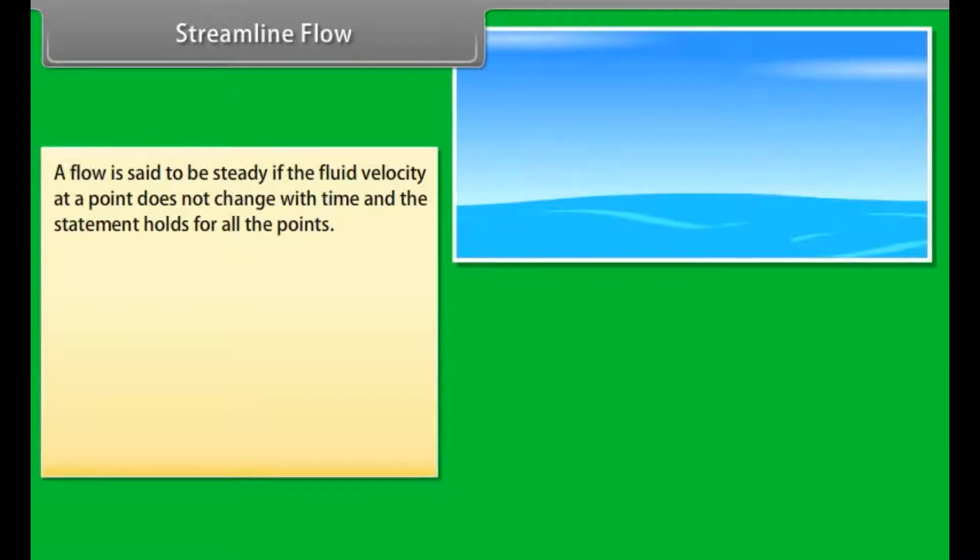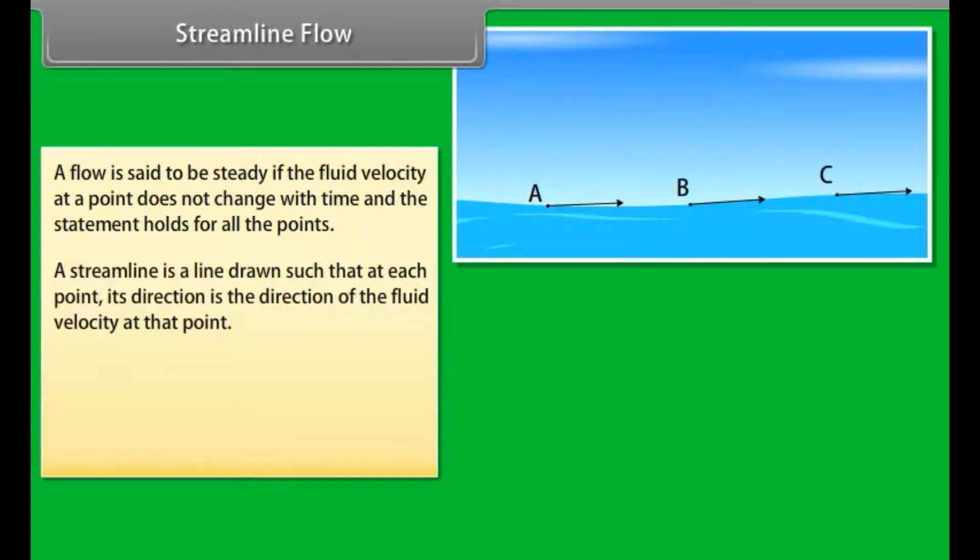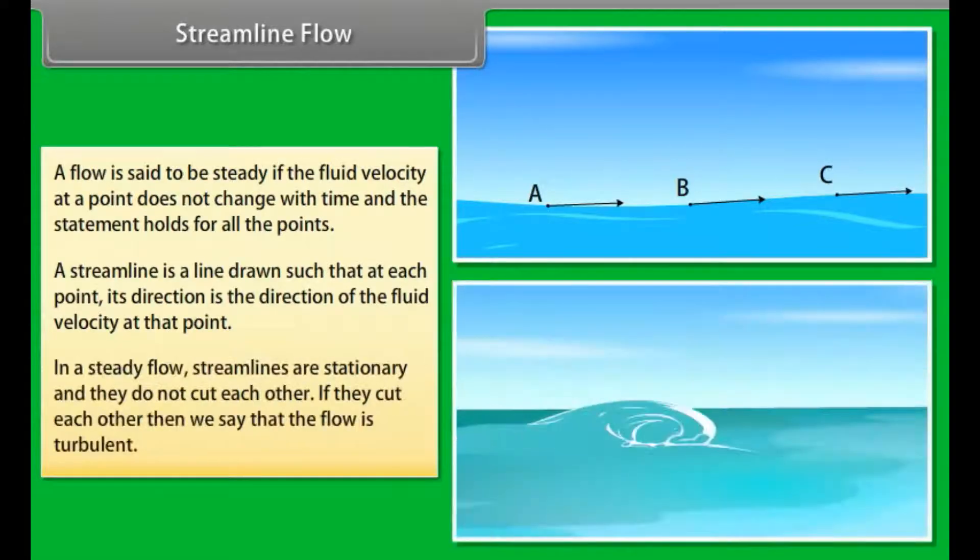Streamline flow. A flow is said to be steady if the fluid velocity at a point does not change with time and the statement holds for all the points. A streamline is a line drawn such that at each point its direction is the direction of the fluid velocity at that point. In a steady flow, streamlines are stationary and they do not cut each other. If they cut each other, then we say that the flow is turbulent.